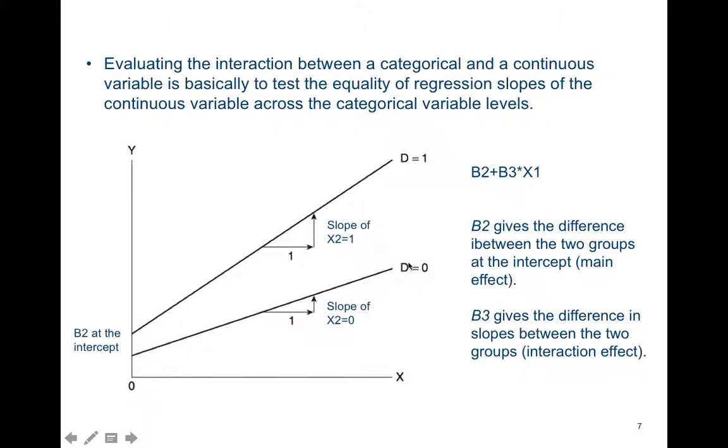The second line is the line for X2 when X2 is 1. The difference in slope between line 1 and line 2 gives the coefficient beta 3, while the difference at the intercept gives the coefficient beta 2.